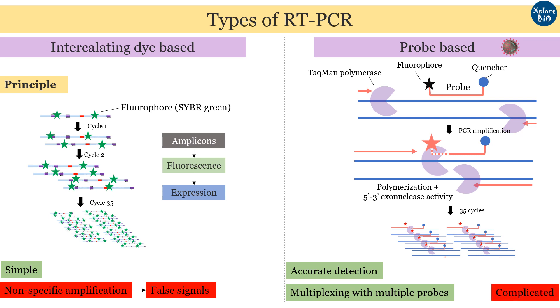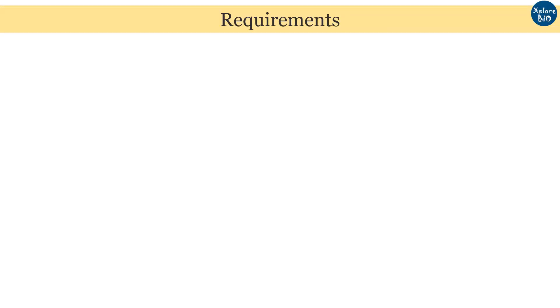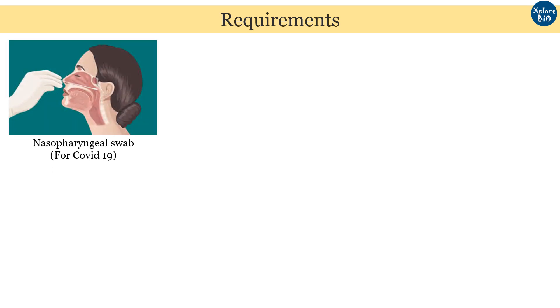The probe designing makes this technique much more complex. From this point onwards, I will be focusing on the probe-based RT-PCR used for COVID-19 detection. Now let's talk about the requirements for RT-PCR. The first is the sample of the individual to be tested. As the COVID-19 virus infects the upper respiratory tract, nasopharyngeal or oropharyngeal swabs are most commonly used.